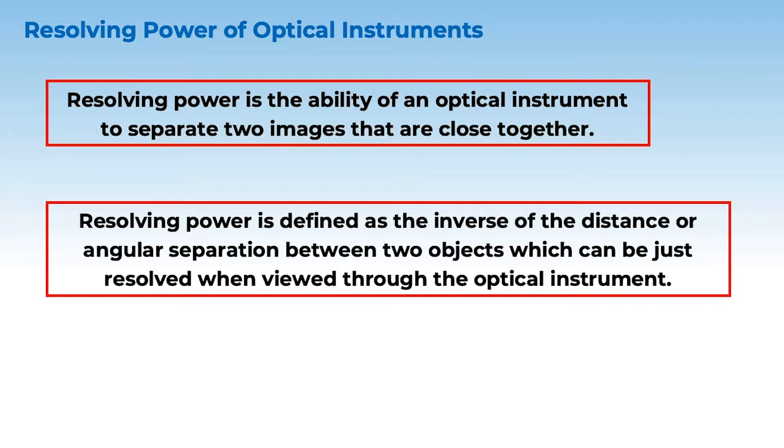Resolving Power is defined as the inverse of the distance between the two objects which can be just Resolved. This means that the two objects which we are trying to resolve, the angular separation is the reciprocal. So the reciprocal of the angular separation which is just Resolved when viewed through the Optical Instrument. Now, this might seem a complicated definition, so let's understand this using illustrations.